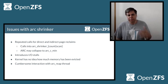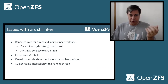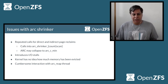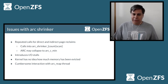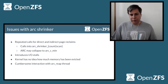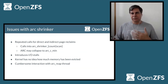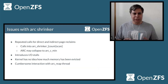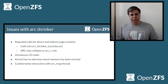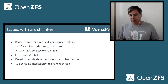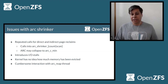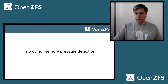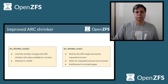We summarized what we found as we dug into the shrinker: we were seeing repeated calls coming in for both direct and indirect page reclaims; it was introducing stalls from the IO pipeline and actual consumers of IO; we couldn't figure out how the kernel was supposed to know that we had made any progress. And then there was this strange interaction with the arc_reap thread, which was the one we thought was supposed to detect memory pressure.